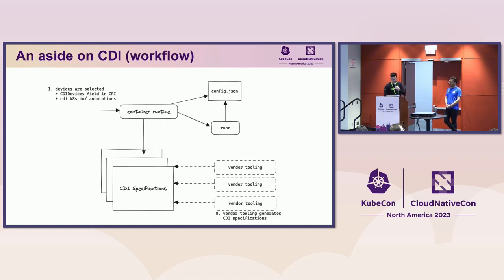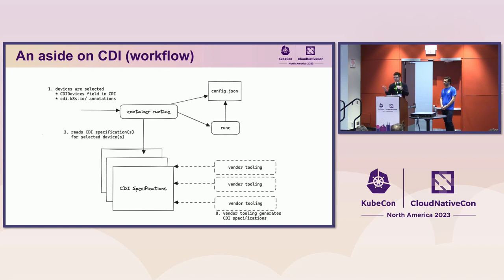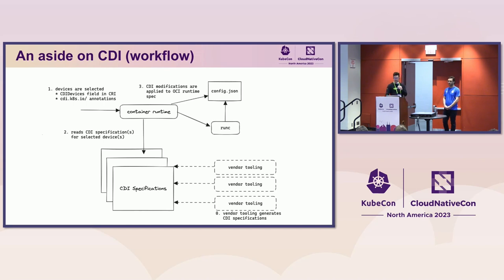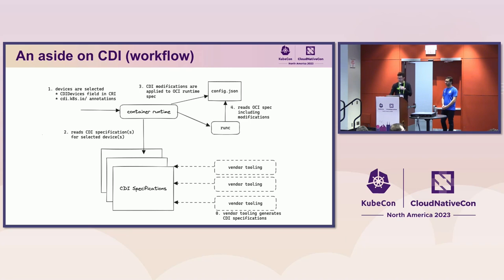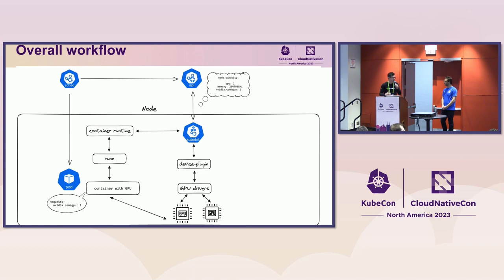On the consumption side, a container runtime receives a CRI request to create a container. That request may include CDI devices in the spec field, or as annotations used before the spec field was added. The container runtime — such as CRI-O or containerd, both of which support CDI natively — reads the CDI specifications generated by the vendor tooling, applies those modifications to the OCI runtime spec, and invokes runc as normal. Runc reads the OCI spec with modifications and creates the container with access to the required devices.